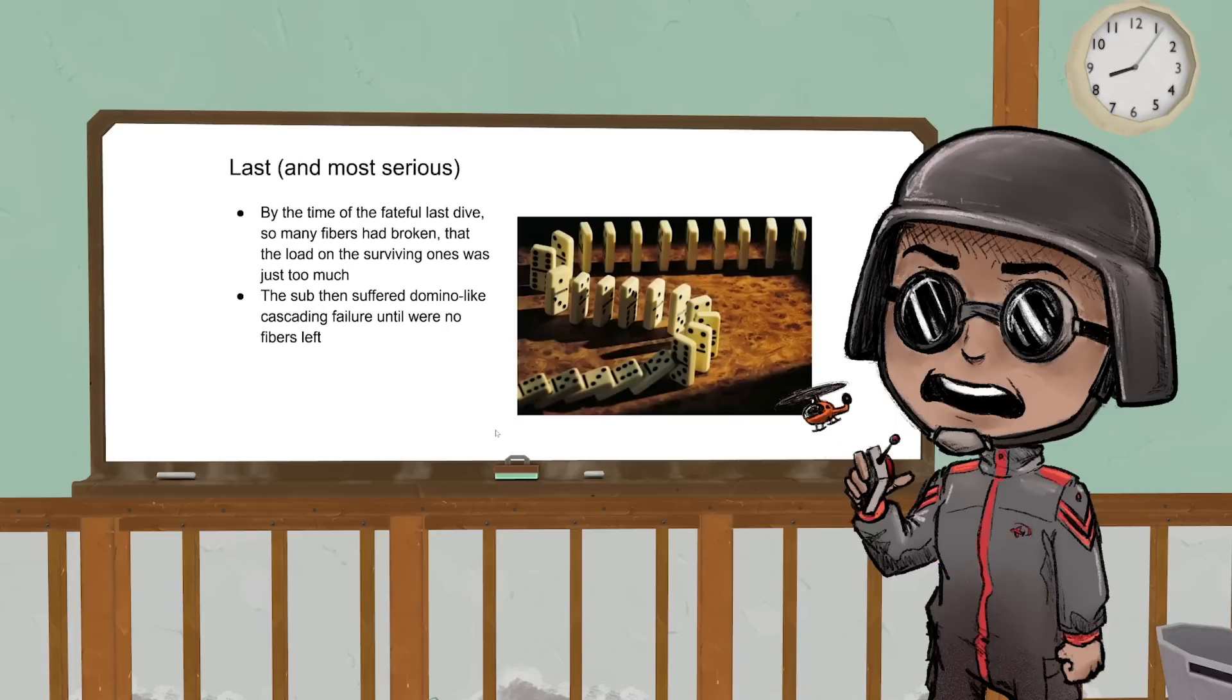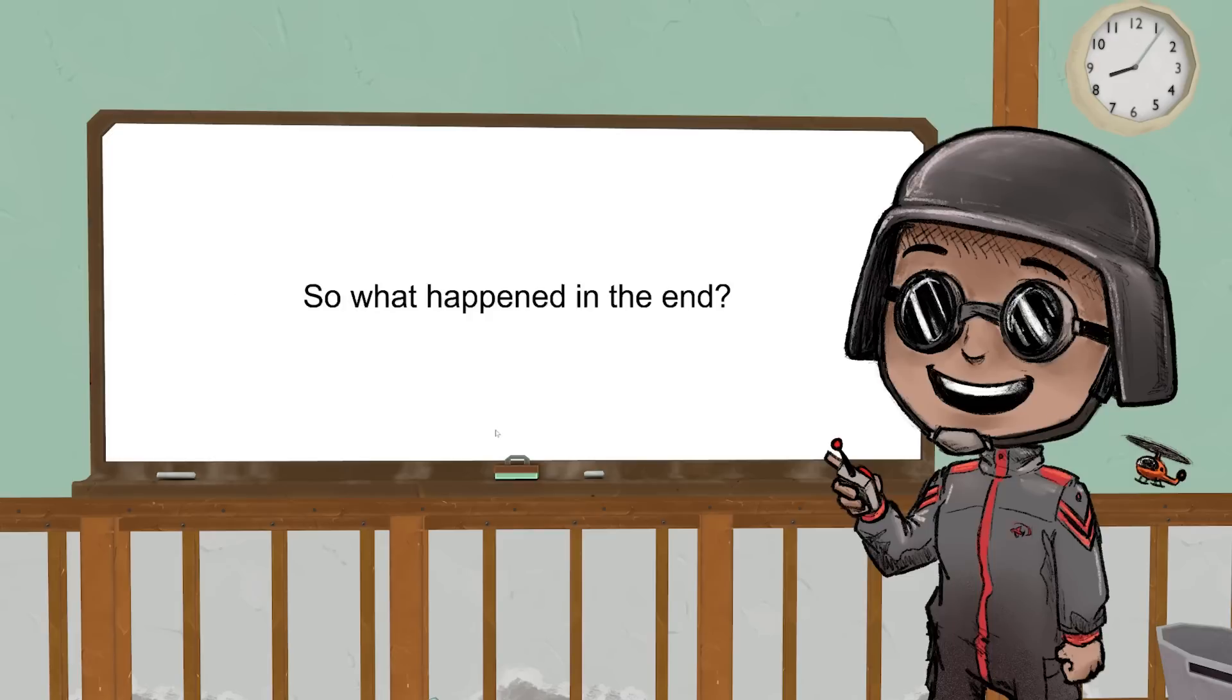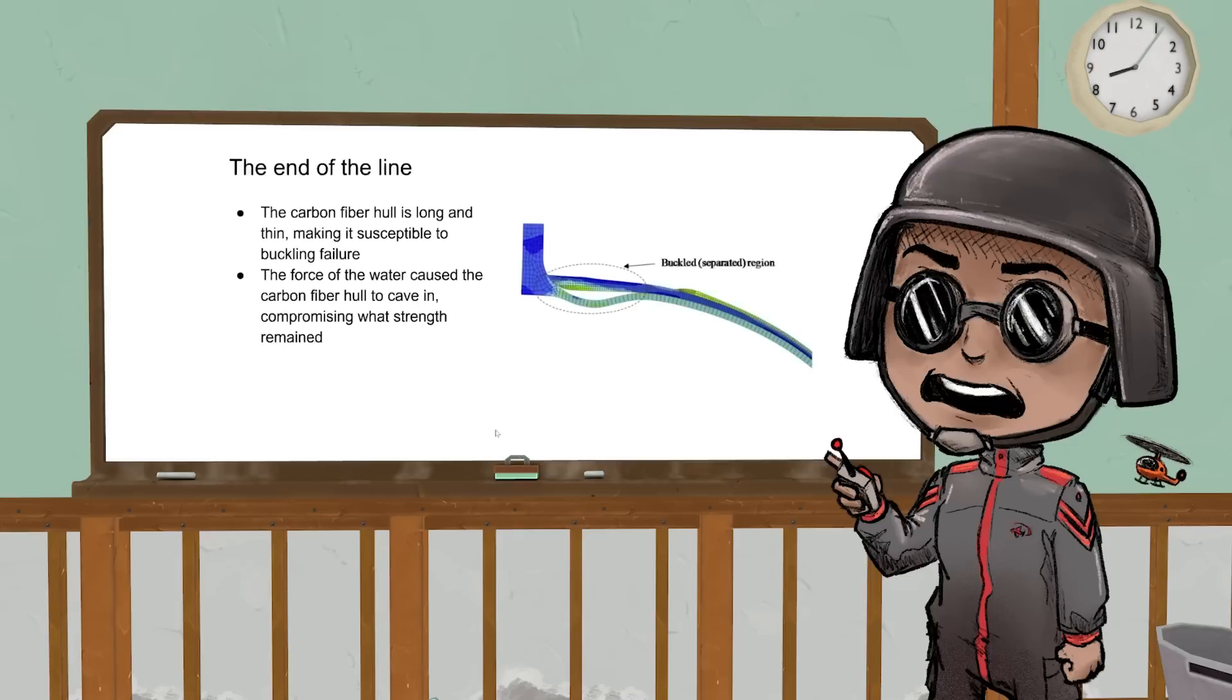So in the end, what happened? The carbon fiber was long and thin, meaning it probably buckled. The carbon fiber caved in and it just put a hole in it, and all 5,000 pounds of pressure per square inch came in and flattened everybody.